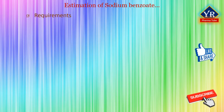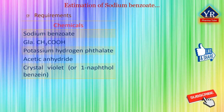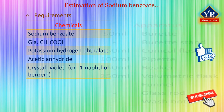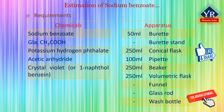The chemicals required to perform estimation of sodium benzoate include sodium benzoate, glacial acetic acid, potassium hydrogen phthalate, acetic anhydride, and crystal violet or 1-napthol-benzene indicator. The glassware include a 50 ml burette, burette stand, 250 ml conical flask, 100 ml pipette, 250 ml beaker, 250 ml volumetric flask, funnel, glass rod, and wash bottle.